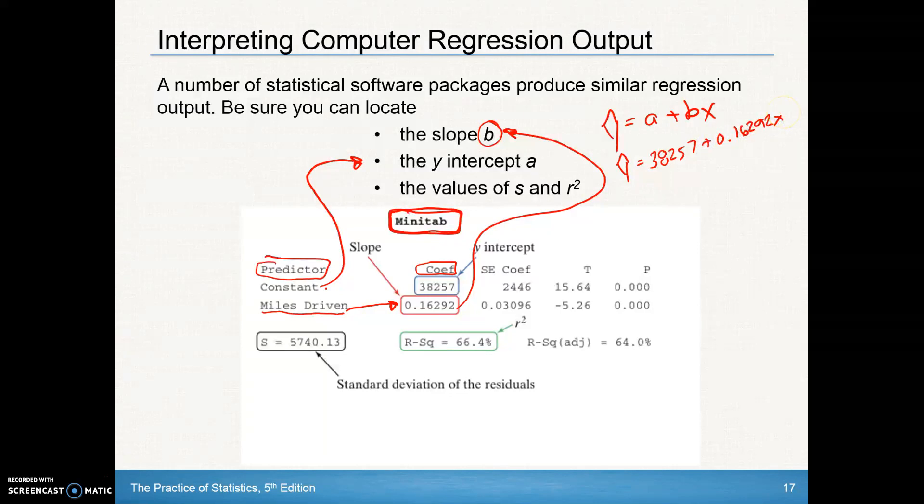And that's how we can create the equation from those values there. You should also be able to find the s, the standard deviation of the residuals, that is right here. So the average distance each point is from the regression line is that many units. And here's our r-squared value right here where it says r-squared. So 66.4% of the data is accounted by the regression line or follows the regression line.